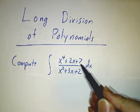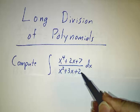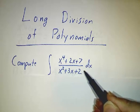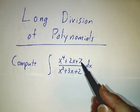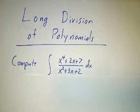What happens if the numerator has as many powers as the denominator, or as in this case, it has even more powers than the denominator? And the answer is that we can do a long division.